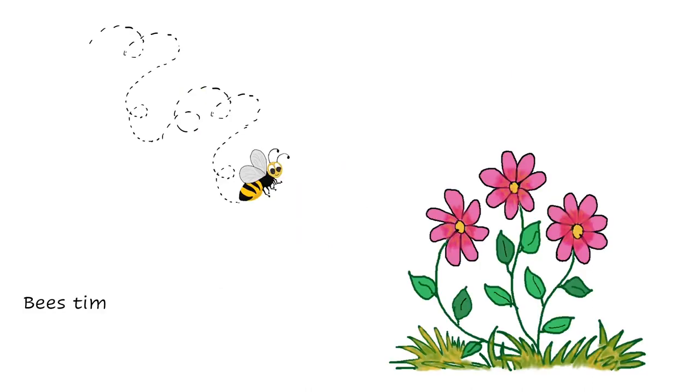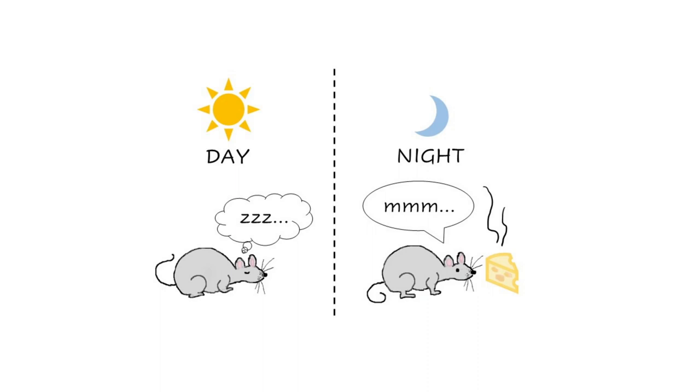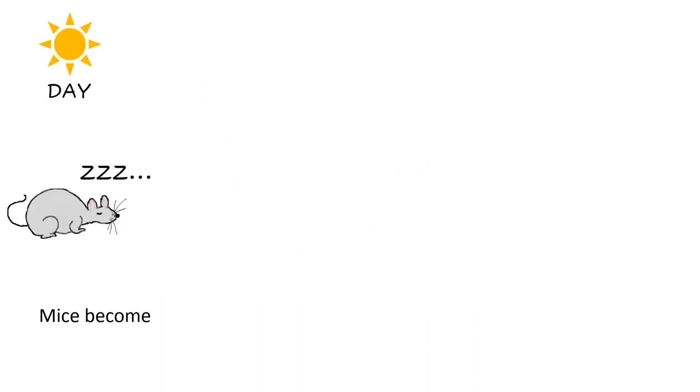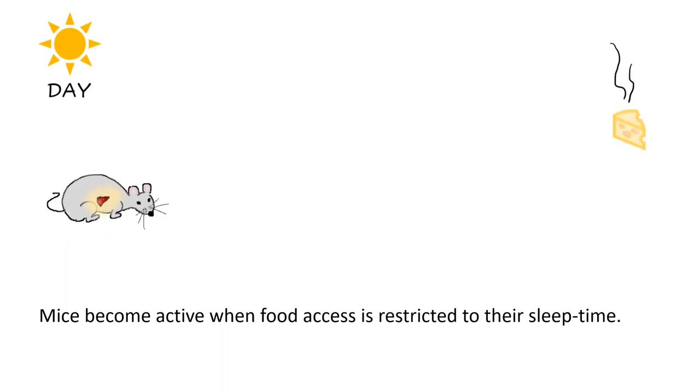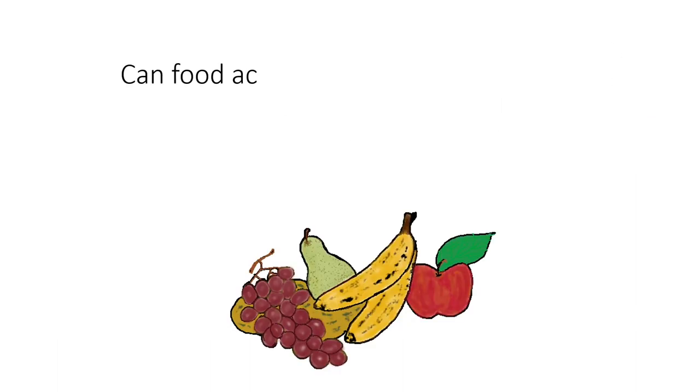For example, bees time their activity according to plant flowering times which itself is under circadian clock regulation. Similarly, presence of food at odd times can also signal to clocks in the liver of mice that make them active when food access is restricted during their usual sleep time. So what happens to activity of fruit flies when food availability is cyclic? Can food act as a time cue in fruit flies?